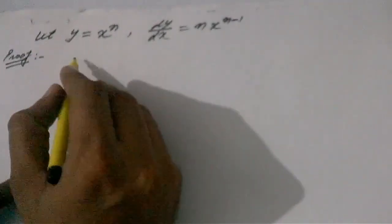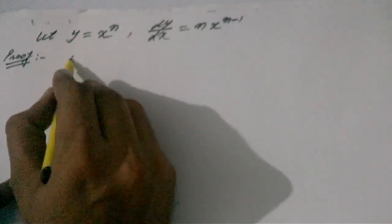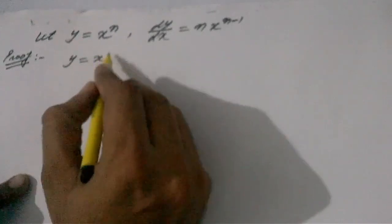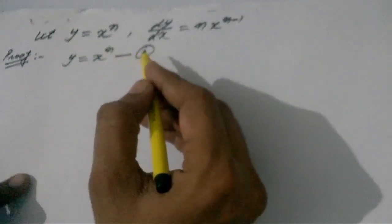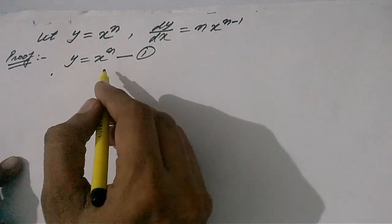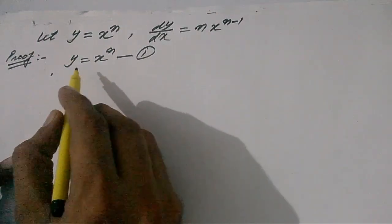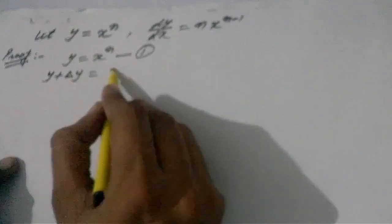We are going to prove it. As y is equal to x to the power n, let it be equation number one, and let us take a small increment in x, delta x, as a result of which the increment in y is delta y.